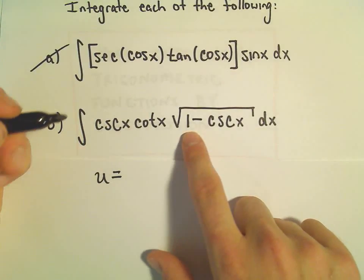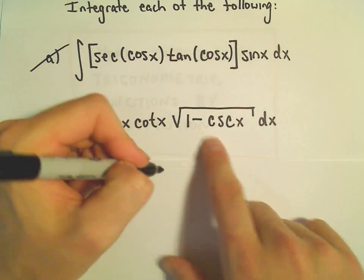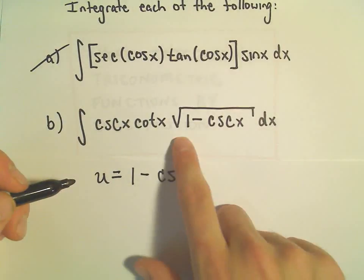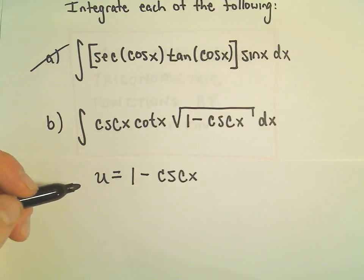Well, I'm going to include the constant. I mean, if we take the derivative, that goes away in any case. So why not let's go ahead and throw it in there. So I'm going to pick u to be the stuff underneath the square root.